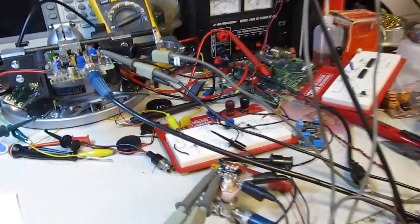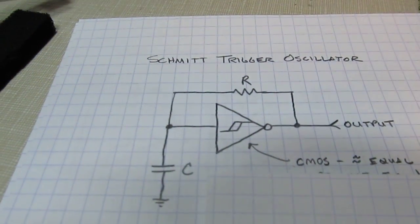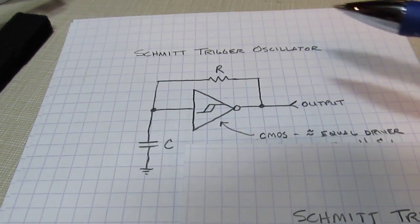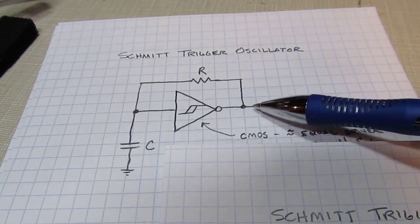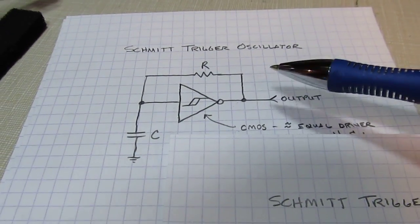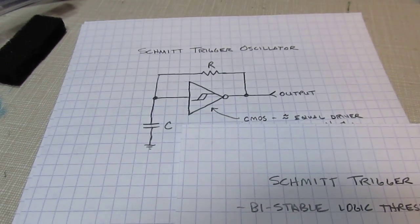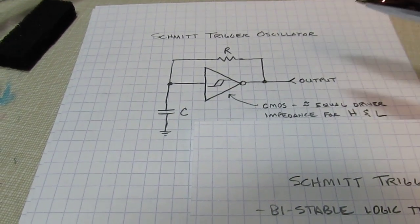Okay, in this video we're going to talk about a Schmidt trigger oscillator. A Schmidt trigger oscillator is based on a logic inverter, usually CMOS because of the equal output impedances, which gives us a good close to 50% duty cycle. But it's based on this CMOS inverter that typically has a Schmidt trigger input.